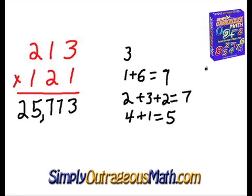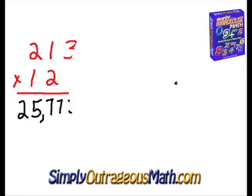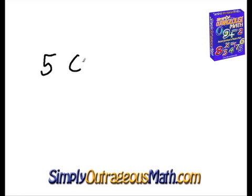We went through that one fairly quickly, so we'll try another one so you can get a better hang of it. In this example, we're going to multiply 503 times 102.